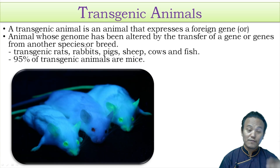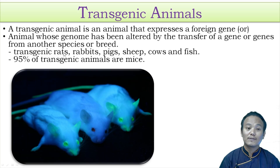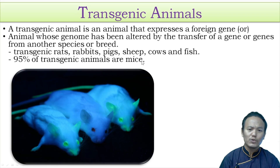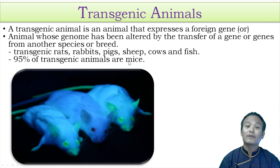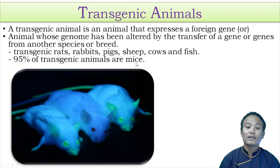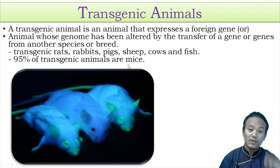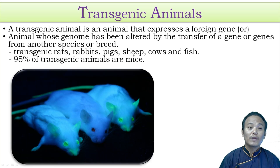There are different kinds of transgenic animals created by scientists in the laboratories — transgenic rats, rabbits, pigs, sheep, cows, and fishes. But 95 percent of the transgenic animals are said to be mice. Maybe they are easier to maintain within the laboratories, or maybe there are fewer legal or ethical issues concerning the genetic manipulation of mice compared to other animals.